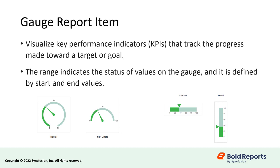In Bold Reports, we have provided radial and linear gauges with pointer and range properties. The pointer indicates the gauge's current value. The range indicates the status of values on the gauge, and it is defined by start and end values.